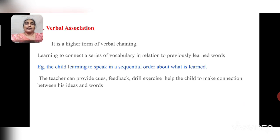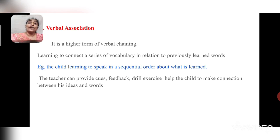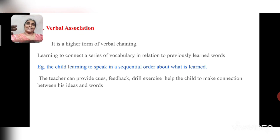The next level is verbal association, which is a higher form of verbal chaining. Many words linked together lead to a chain of action. If a child is asked to describe the procedure of an experiment sequentially, verbal association takes place. The teacher can provide hints, clues, cues, feedback, or drill exercises to help the child make connections between ideas and words.